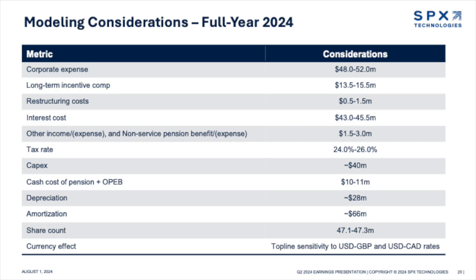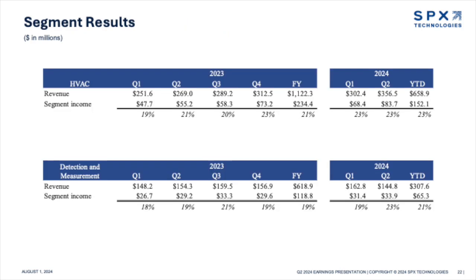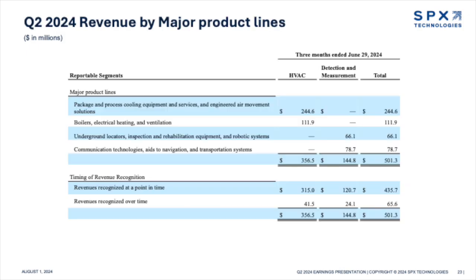In addition to our typical adjustments, adjusted earnings this quarter exclude a charge for the resolution of a legal dispute. The after-tax impact to adjusted EPS was $0.13 per share. The settlement resolved all litigation related to an earn-out payment to the former owner of ULC. For the quarter, total company revenue increased 18.4% year-on-year. Organically, revenue grew 9%, driven by HVAC, while acquisitions drove a 9.5% increase, and FX was a slight headwind. Consolidated segment income grew by $33.2 million, or 39.3%, to $117.6 million, while segment margin increased 360 basis points.